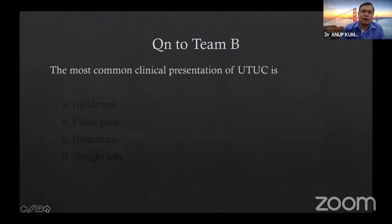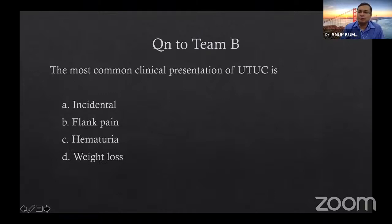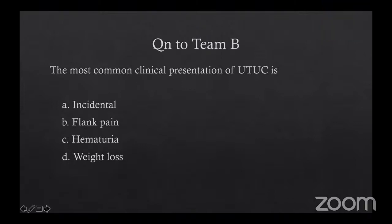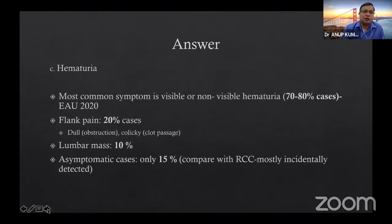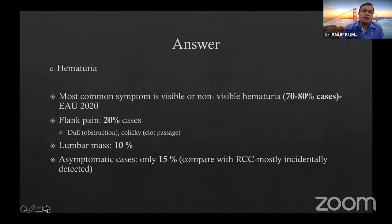Question 6 to Team B: Most common clinical presentation of upper tract urothelial carcinoma? Options: incidental, flank pain, hematuria, weight loss. Dr. Prashant answers C — hematuria — found in 56 to 98% of cases, which is correct. As stated initially, up to 70-80% can have visible or microscopic hematuria. Flank pain is 20%, mass in lumbar area 10%, and asymptomatic 15%. This contrasts with RCC where incidental detection now predominates.